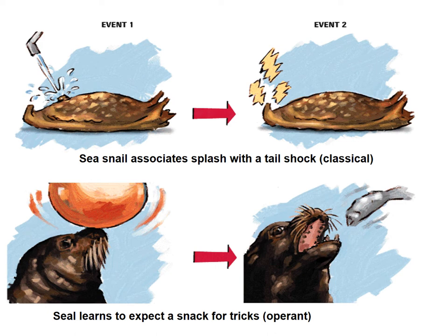Compare that with operant conditioning. Let's say you want to teach a pet a trick, or to not go to the bathroom inside — whatever the behavior you want to shape. Unfortunately, oftentimes you have to wait for that behavior to happen first. You have to be watching for when the seal starts to play with the ball, and then be right there to reinforce or reward that behavior so it gets something it likes, which makes it more likely to repeat this behavior because it associates it with the reward. Hopefully you can see the difference between classical and operant conditioning.